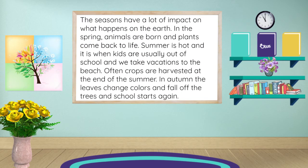The seasons have a lot of impact on what happens on the earth. In the spring, animals are born and plants come back to life. Summer is hot and it is when kids are usually out of school and we take vacations to the beach. Often, crops are harvested at the end of the summer. In autumn, the leaves change colors and fall off the trees, and school starts again.